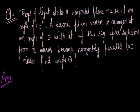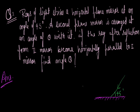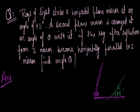As given in the question, rays of light strike a horizontal plane mirror at an angle of 45 degrees. A second plane mirror is arranged at an angle theta with it. Suppose there is a second plane mirror at angle theta with the first. According to the question, if the ray after reflection from the second mirror reflects in this direction and becomes horizontal, we have to find out theta.